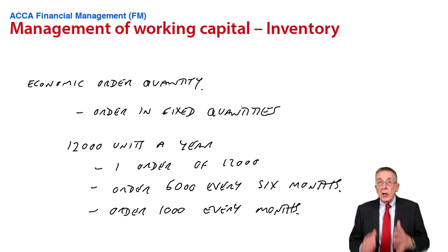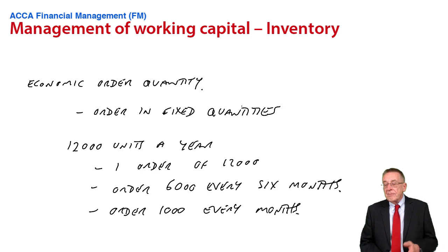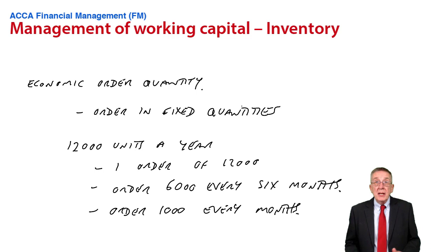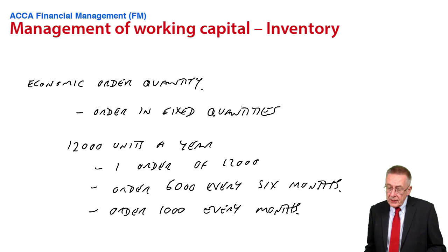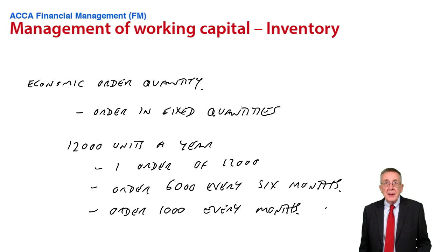But we only consider ordering in fixed quantities each time. The problem is to decide, when we look at the costs involved, which would be better — would we be better to place one order a year for 12,000, or would we be better to order 1,000 twelve times a year, every month, and so on.